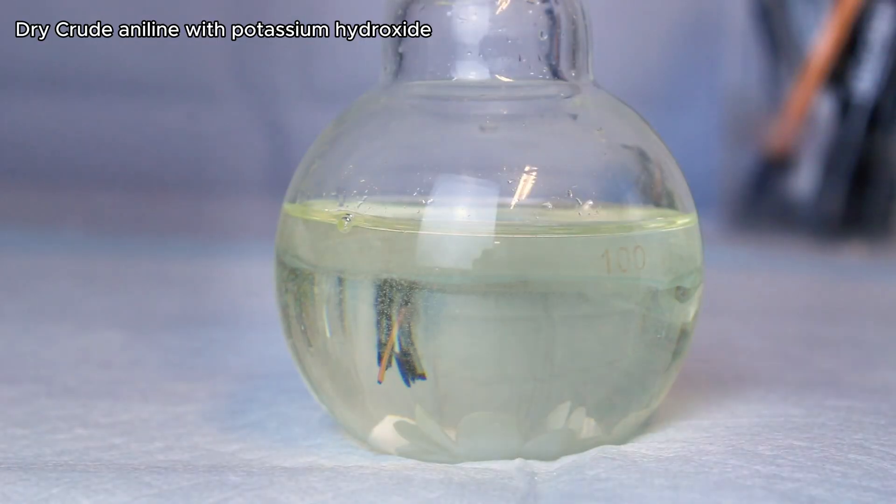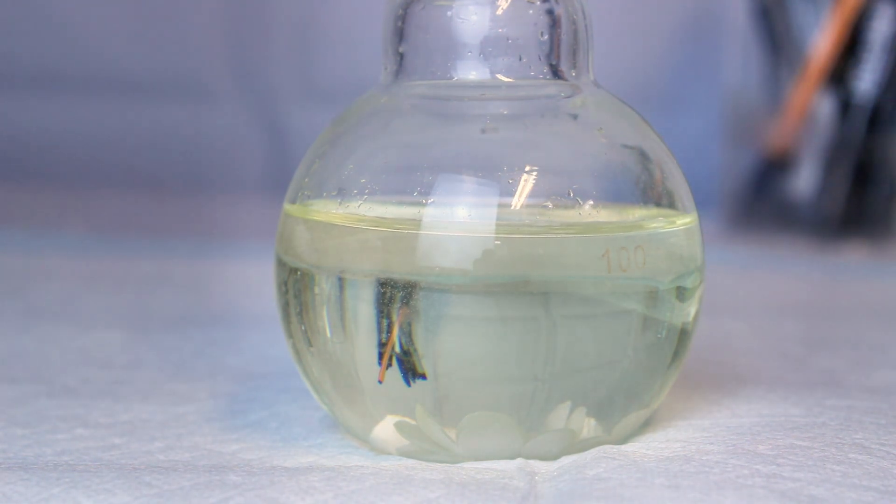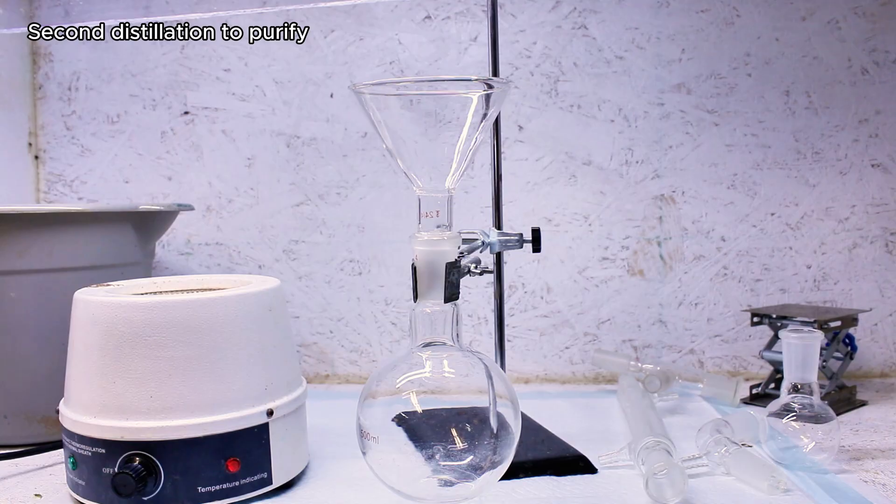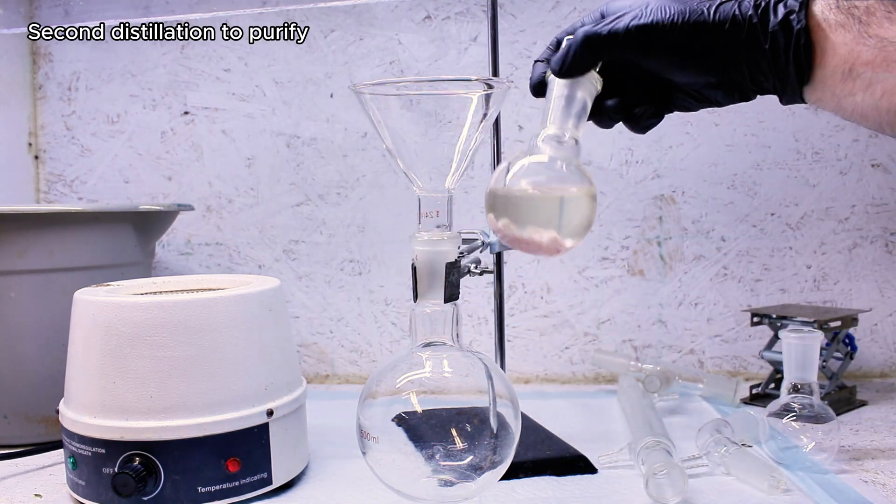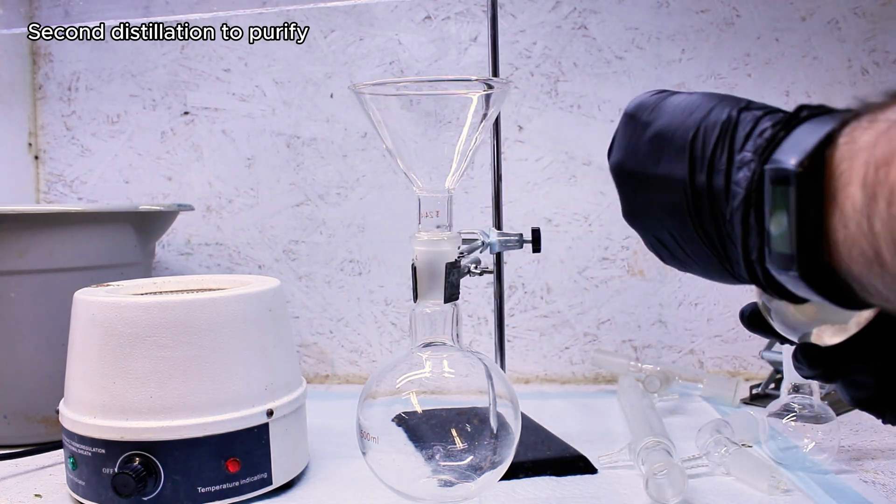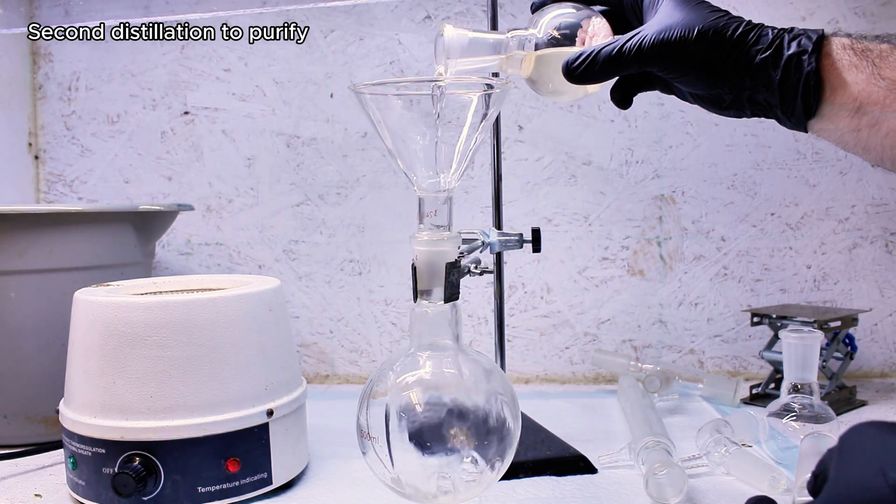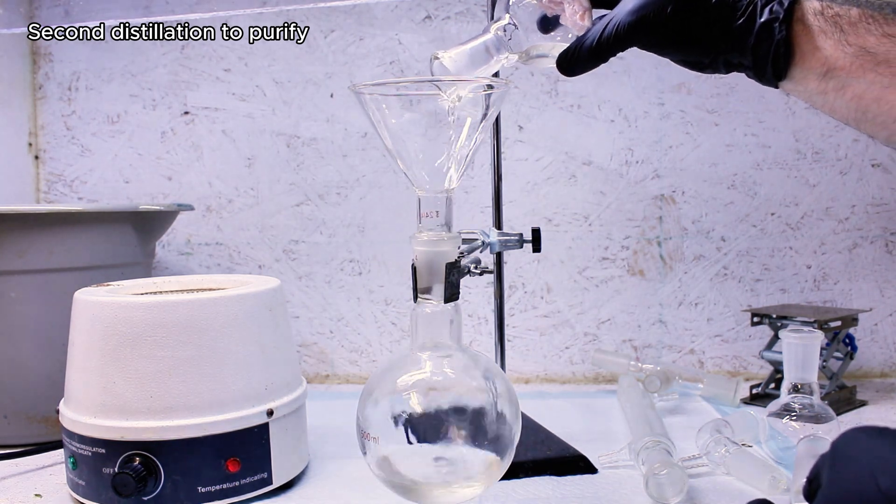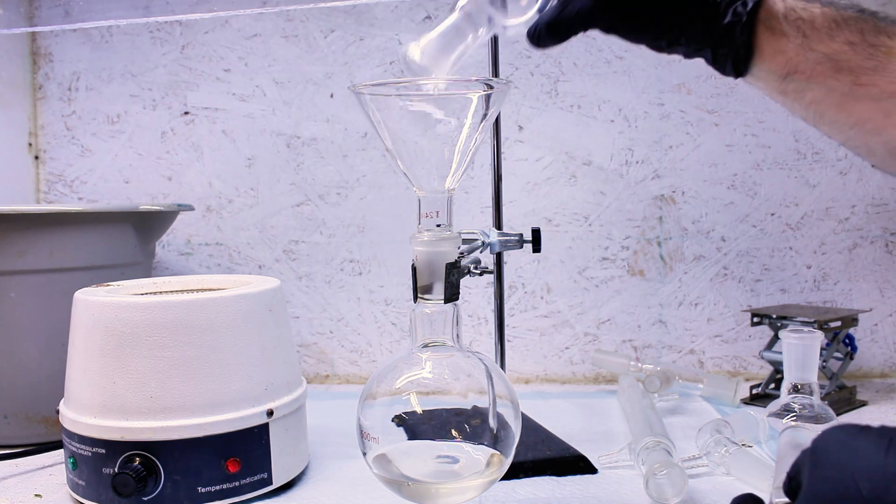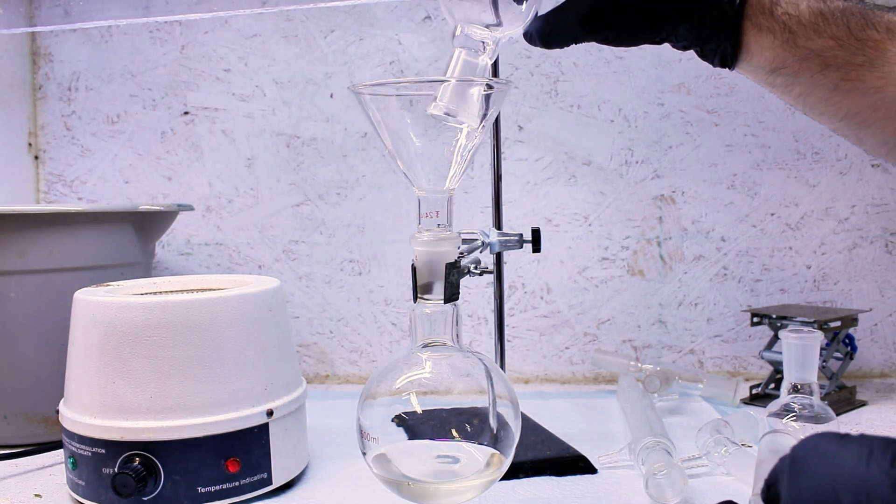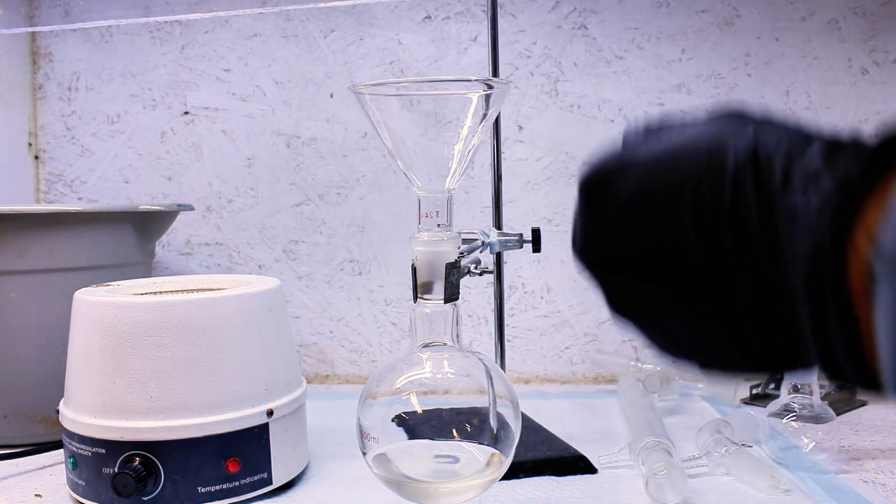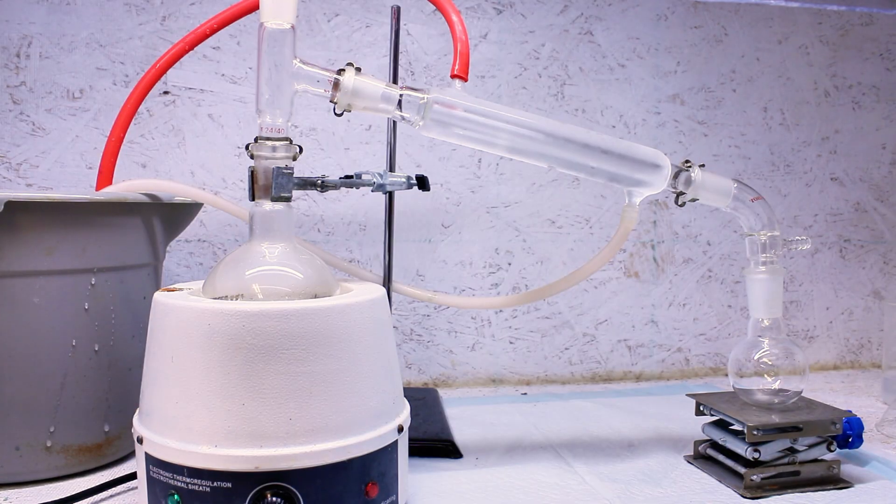When I come back to it the next day, the now much drier aniline is added back to a new boiling flask and set up for another distillation. I crank my heating mantle all the way back up, and the point of this step is to try to further purify my crude aniline by redistillation. Ideally during this step you would only collect distillate between 180 and 190 degrees celsius, but I was using my only thermometer for a different project so I didn't really bother.